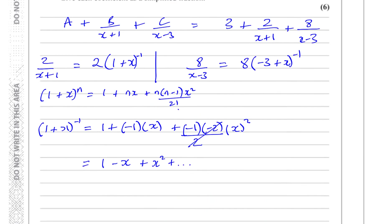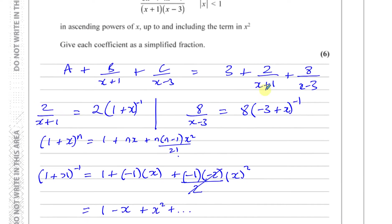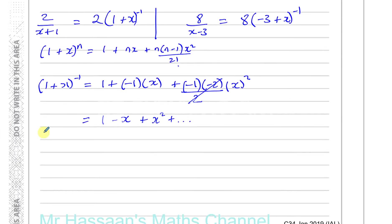That's just the expansion of (1+x)^(-1); we'll still need to multiply it by 2 and add 3, then add it to the expansion of the other term. Now I'm going to take the (-3+x)^(-1) part and rewrite it in the form (1+x)^n, which means factoring out from the bracket.